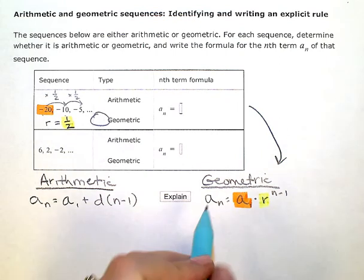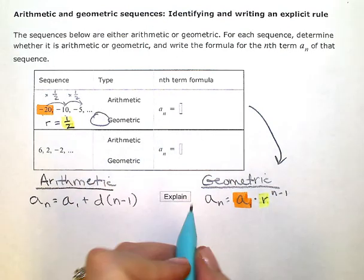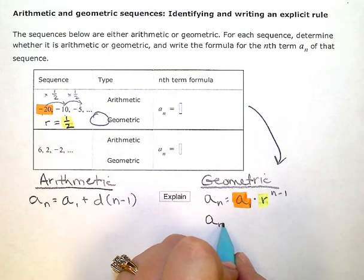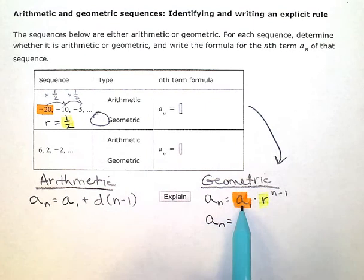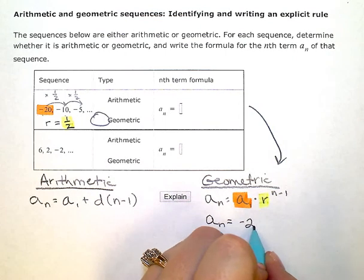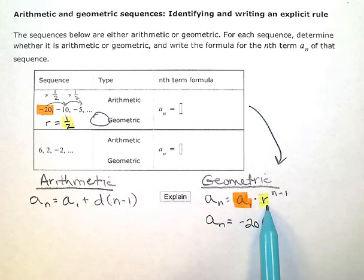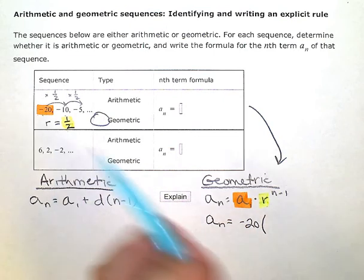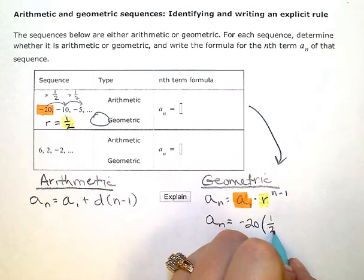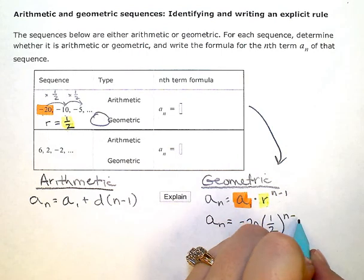So my explicit formula is going to be a_n equals—instead of a_1, I'm going to substitute in the first term. And then I'm going to multiply. Instead of r, I'm going to put in my common ratio. And then my exponent is n minus 1.